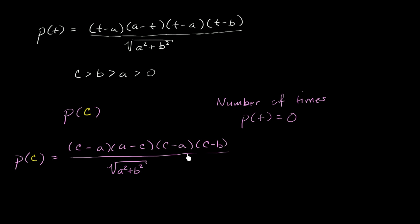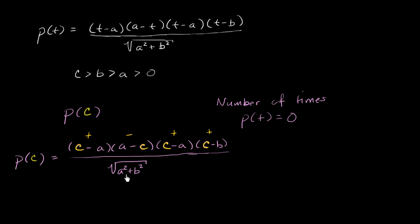What do we know about this quantity? Let me highlight all the c's: c minus a, a minus c, c minus a, c minus b. Well, they tell us c is larger than a and b, and they're all positive. So what's c minus a? Since c is greater than a, this is positive. What about a minus c? Since a is less than c, this is negative. c minus a again is positive. And c minus b is also positive since c is greater than both b and a. The denominator, the square root of a squared plus b squared, is just a positive value.